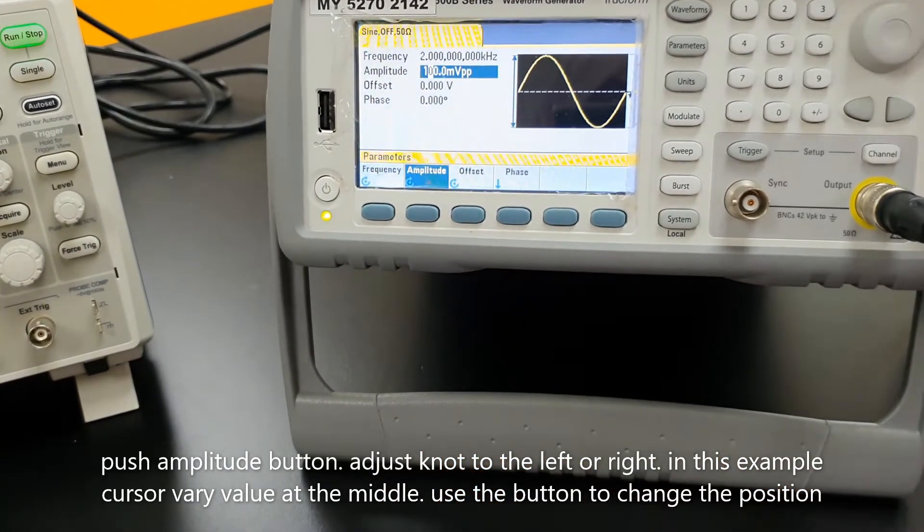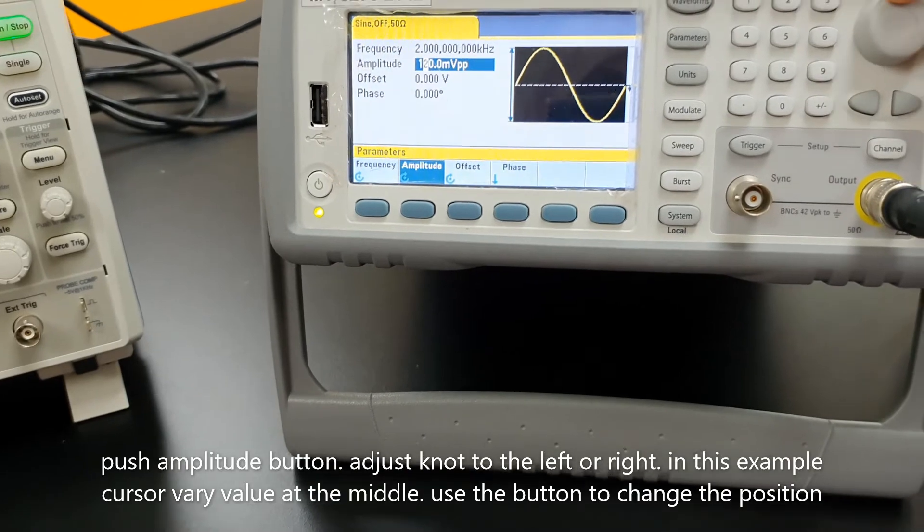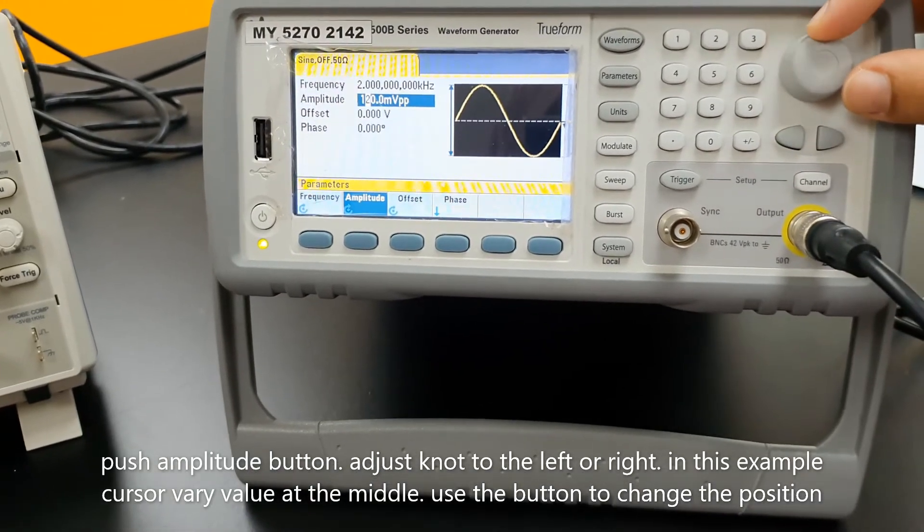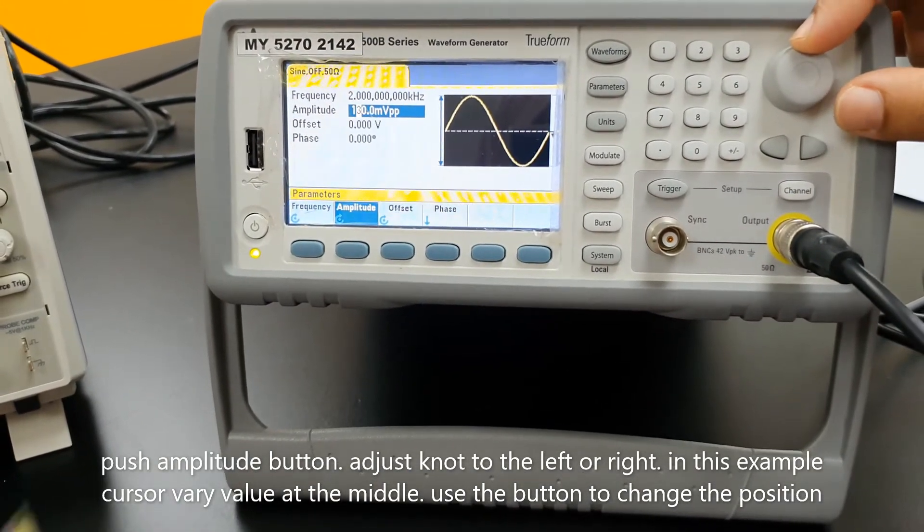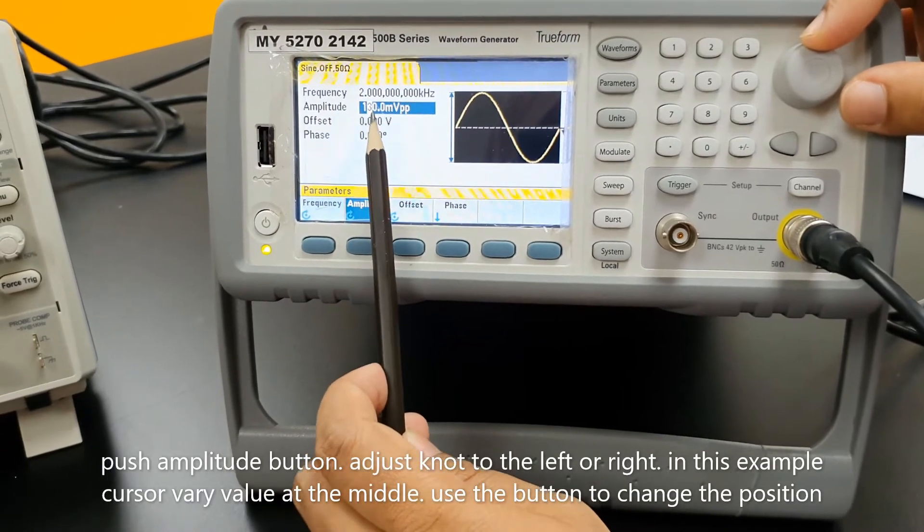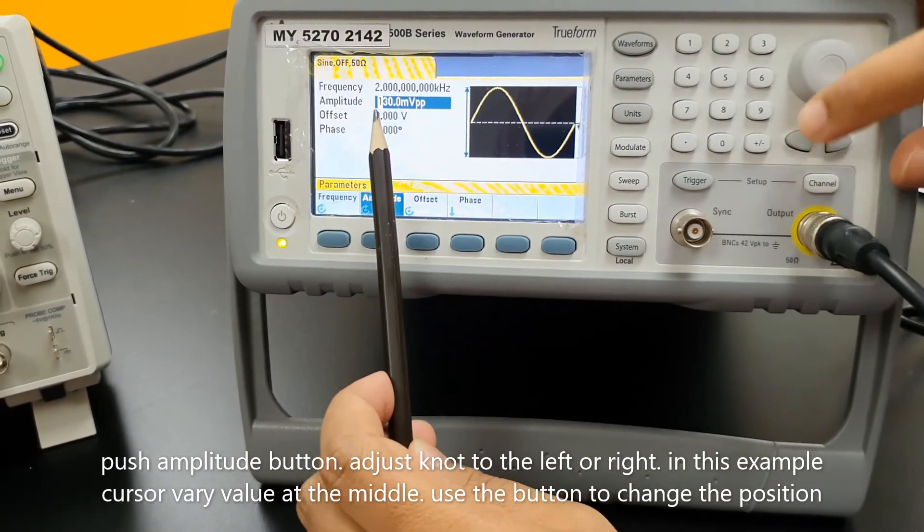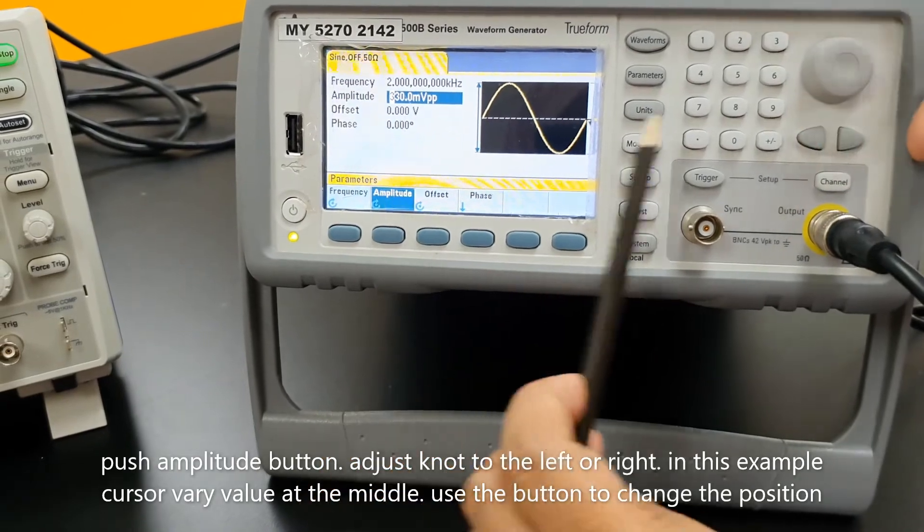Push amplitude button. Adjust the knob to the left or right. In this example, the cursor varies value at the middle. Use the button to choose position of value to set.